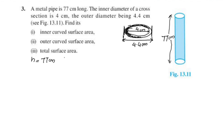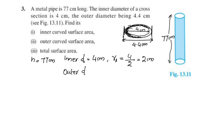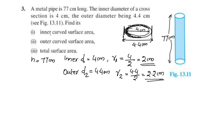The inner diameter is 4 cm. The diameter is not the radius — we have two radii. The inner radius r1 is 4 divided by 2, which equals 2 cm. The outer diameter is 4.4 cm, so the outer radius r2 is 4.4 divided by 2, which equals 2.2 cm.